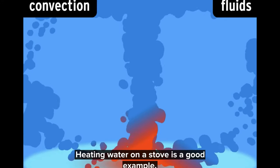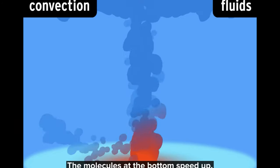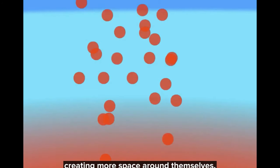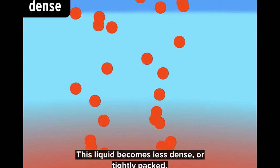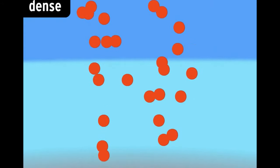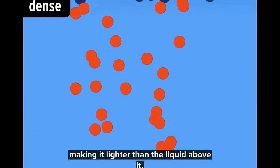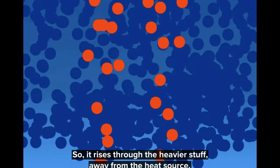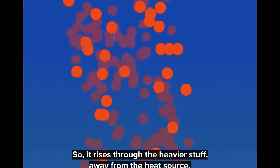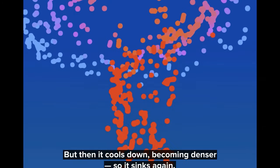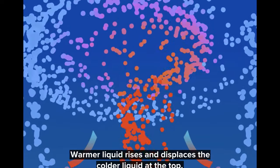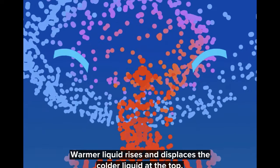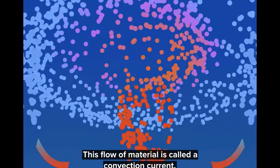Heating water on a stove is a good example. The molecules at the bottom speed up, creating more space around themselves. This liquid becomes less dense or tightly packed, making it lighter than the liquid above it. So it rises through the heavier stuff, away from the heat source. But then it cools down, becoming denser, so it sinks again. Warmer liquid rises and displaces the colder liquid at the top. This flow of material is called a convection current.